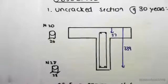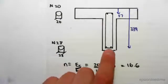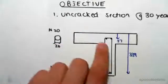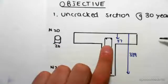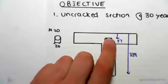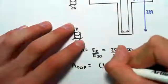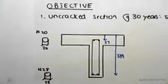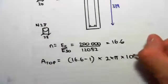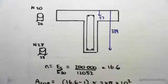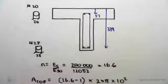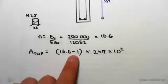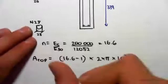We start by finding the corresponding area of the top and bottom steel, converted into equivalent concrete. For the uncracked section, there is extra concrete on the outside and we need to replace the steel within it, so we subtract one set — giving us (16.6 − 1) multiplied by 2 × π × 10², which is the area of one N20 bar times the two bars. We multiply by 16.6 but take off one set to fill those holes.